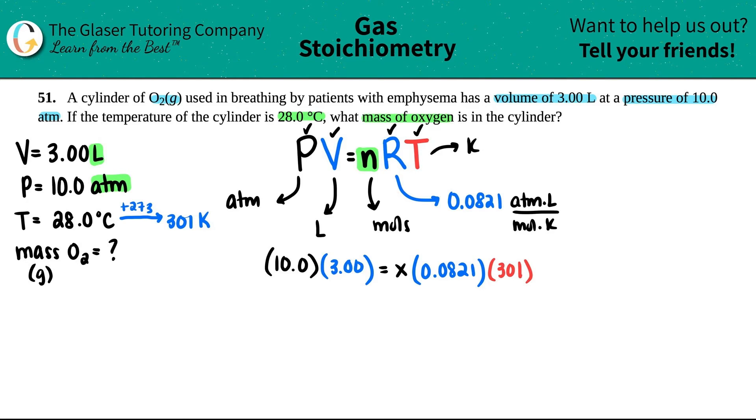We need to solve for x. So I'm just going to divide each side by the R and the T. Now you can get this as one number and one number, but just for simplicity of the video, I'm just going to divide by the two variables.